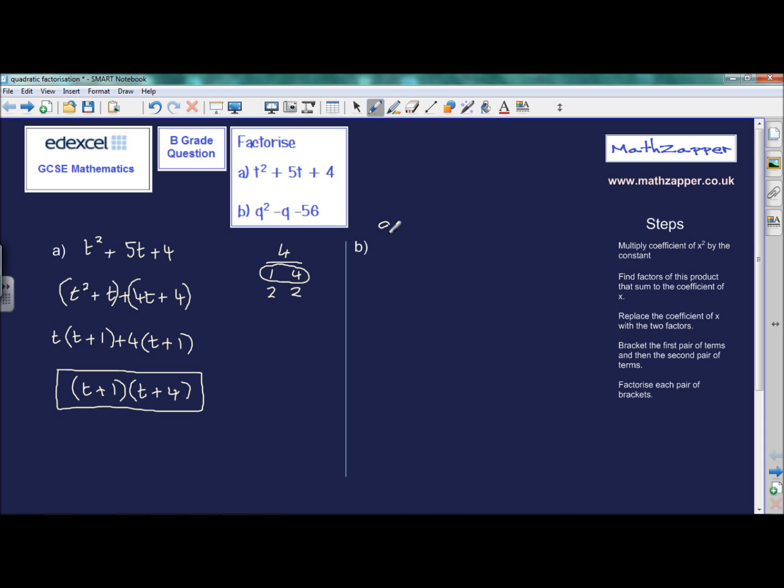b, we have q squared minus q minus 56. And again, we'll use the same steps. Multiply the coefficient of x squared by the constant. Well, x is q in this case, but the coefficient is 1. 1 multiplied by minus 56 is minus 56.